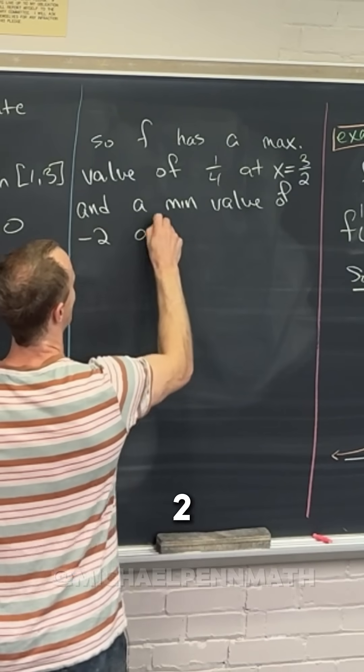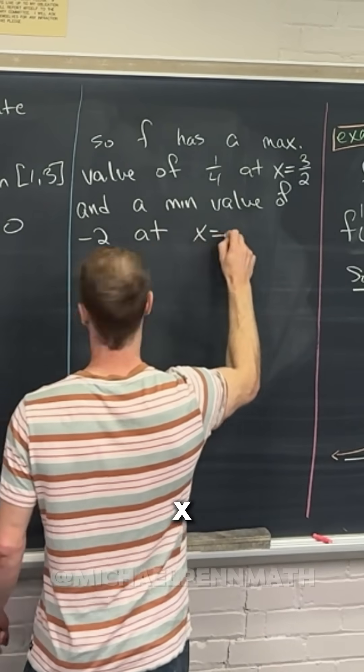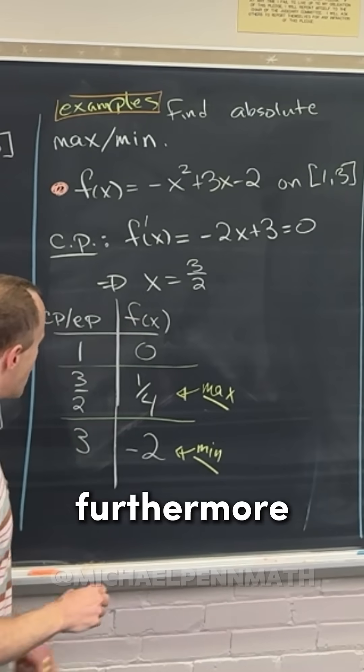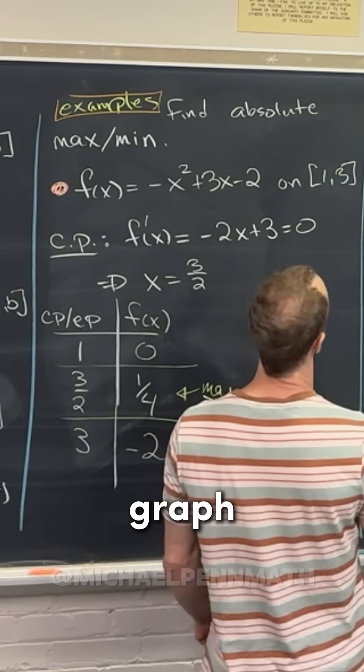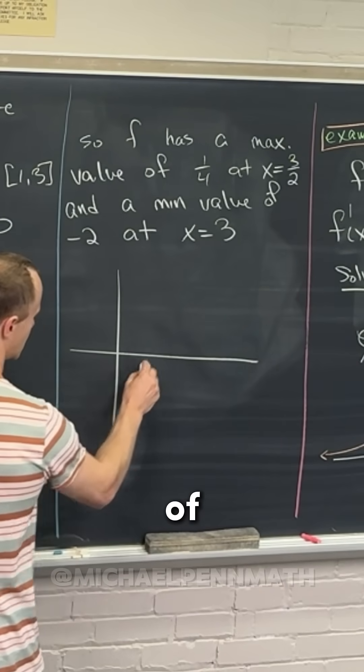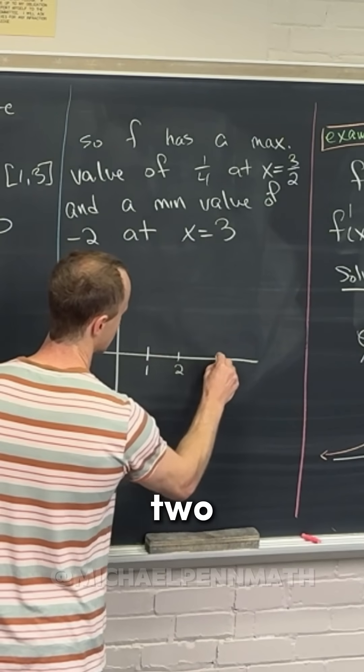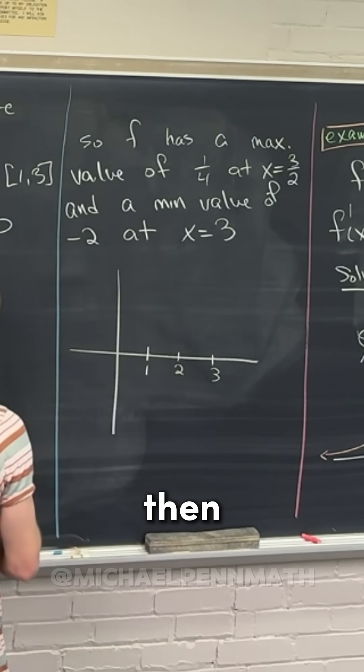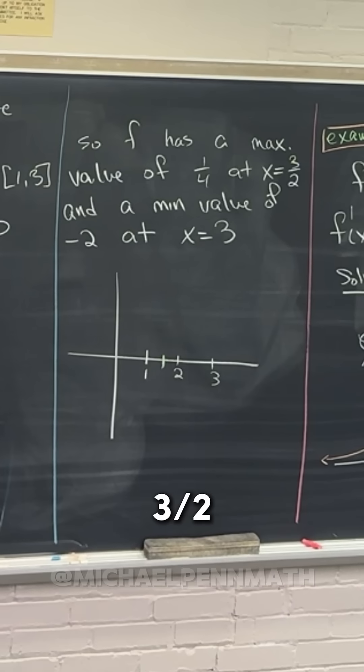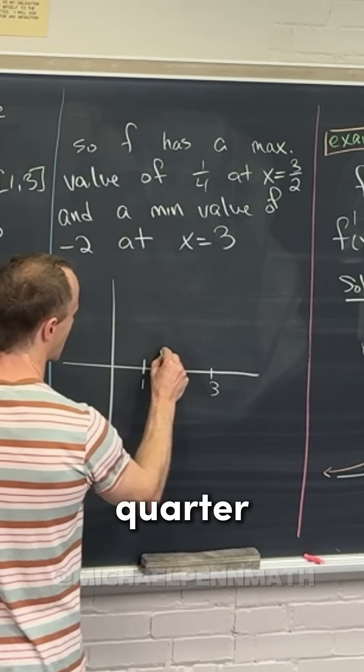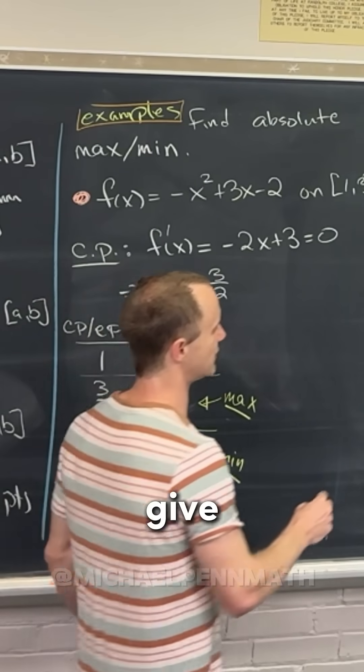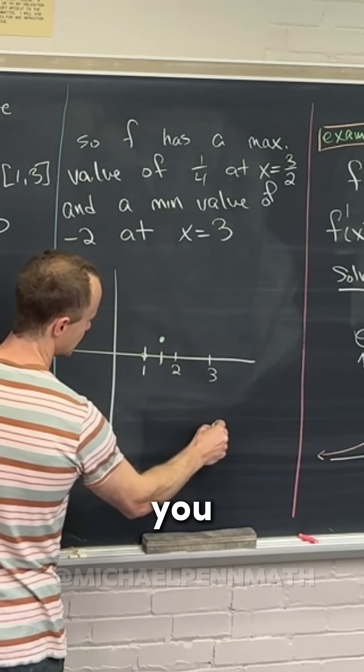So that would be something like this. Furthermore, I think we could look at the graph of this without a ton of drama. So let's see, there's 2, there's 3, then 3/2 is like right there or something, right? So notice 3/2 is going to give you the point 1/4, which is something like this.